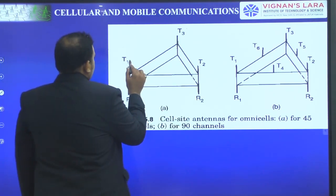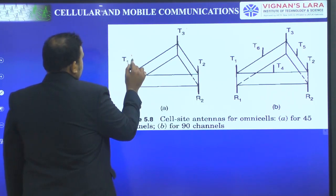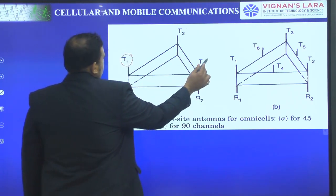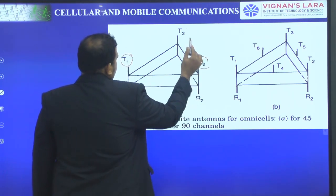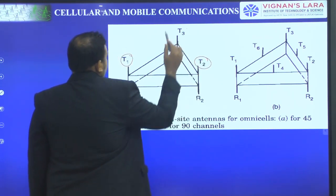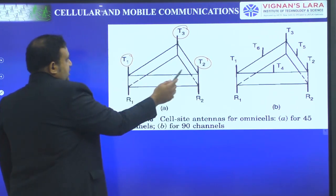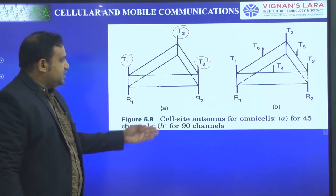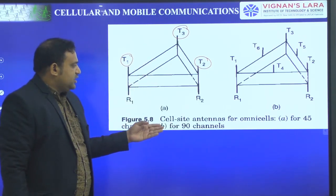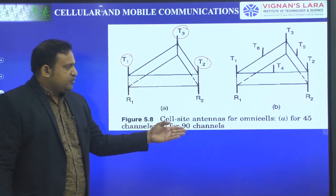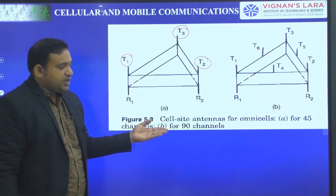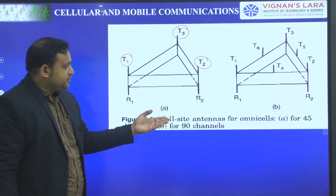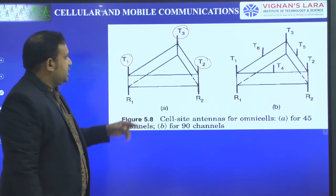Here there are 3 antennas: transmitting 1, transmitting 2, transmitting 3. The figure gives the cell site for omnidirectional omni cells, that is for 45 channels. Each antenna supports 16 channels, and with 3 antennas that is 48 total.